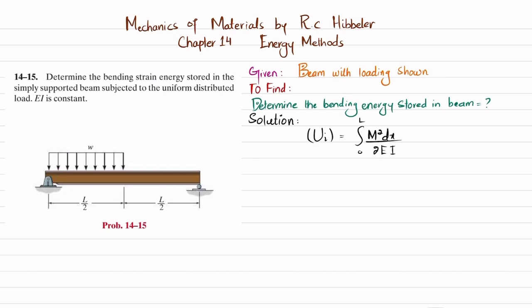Let point A be the pin support and point B be the roller support. Removing the pin support gives reaction force R_A, and removing the roller gives R_B. We will find R_A and R_B using equations of equilibrium. The distributed load converted to a point load equals w·(L/2), acting at its midpoint, which is L/4 from point A.